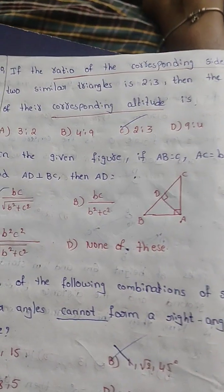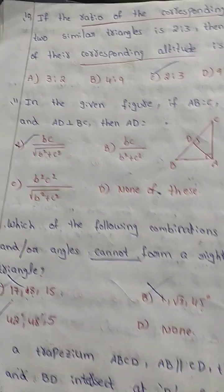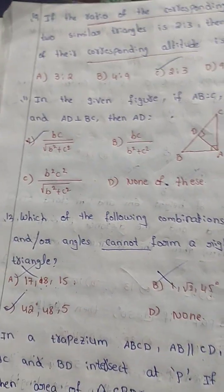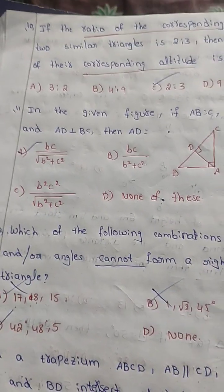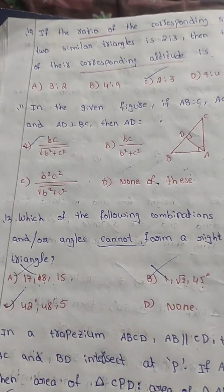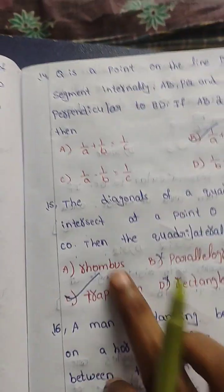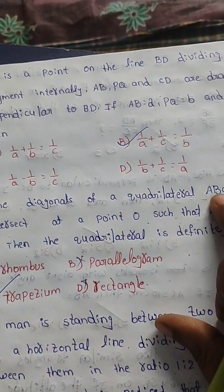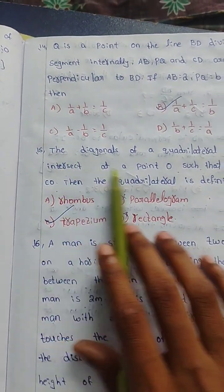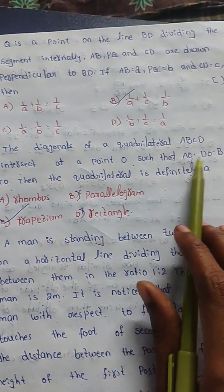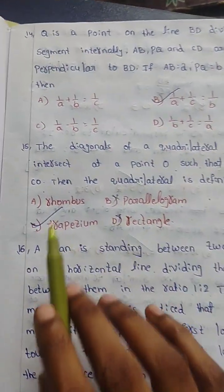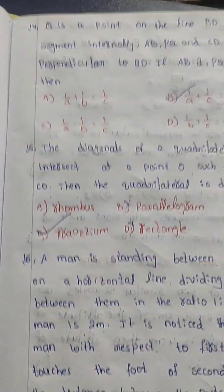For the full explanation video of the most important questions, subscribe to my channel and share with your friends. Next question: the diagonals of a quadrilateral ABCD intersect at point O such that AO × DO = BO × CO, then the quadrilateral is definitely a trapezium.